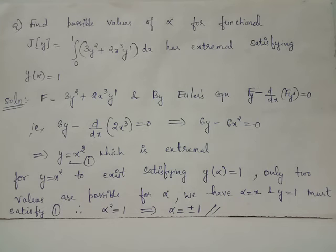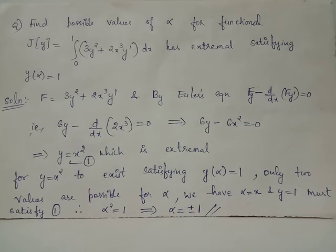Since y = x² satisfies the condition y(α) = 1, we substitute x = α and y = 1 into the equation of the extremal obtained. We get α² = 1, from which we have α equals either +1 or -1.